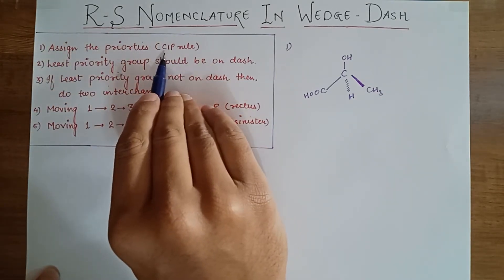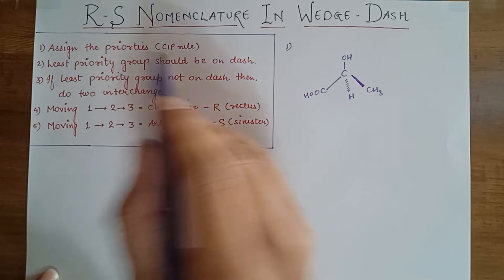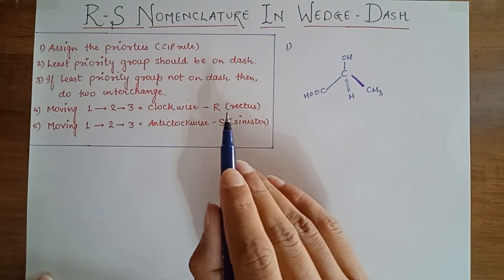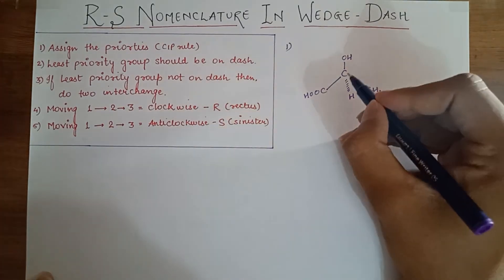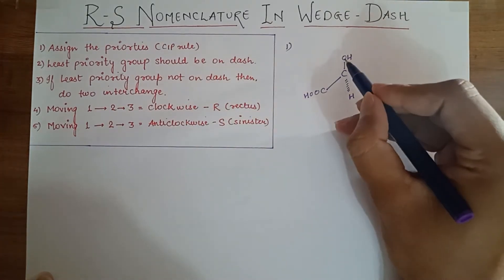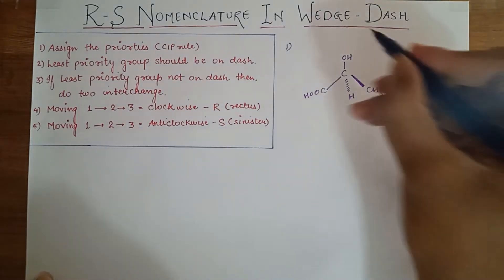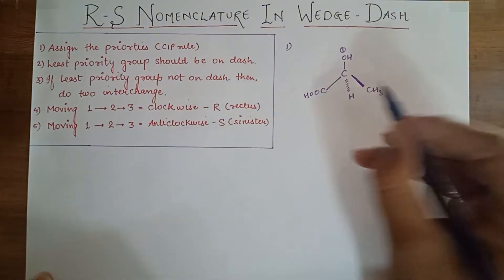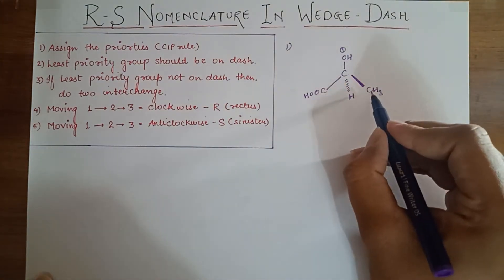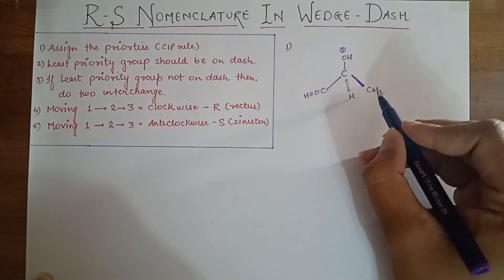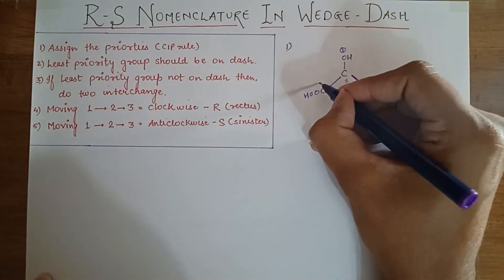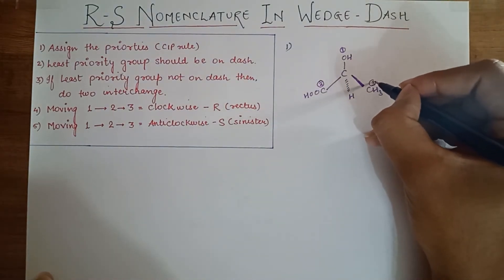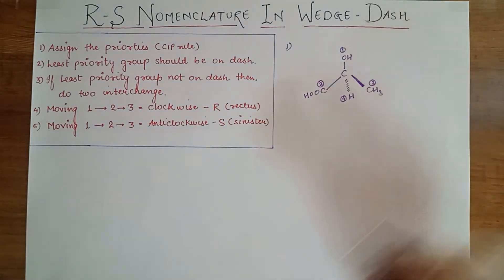The CIP rule — also known as the Cahn-Ingold-Prelog rule — states that priorities are assigned on the basis of atomic number. The atom with the highest atomic number gets the highest priority. Here, the atoms attached to the central carbon are oxygen, carbon, hydrogen, and carbon. Oxygen has atomic number 8, so it gets first priority. For the two carbons (both the same), we look at neighboring atoms: one has hydrogen and the other has oxygen. So second priority goes to the COH group, third to the methyl group, and fourth to hydrogen.